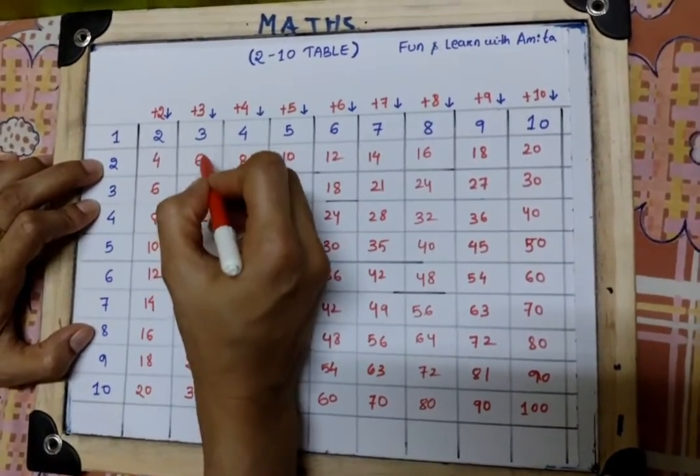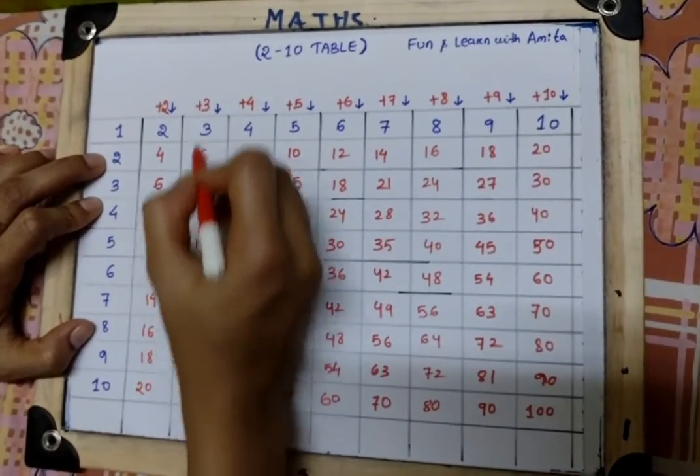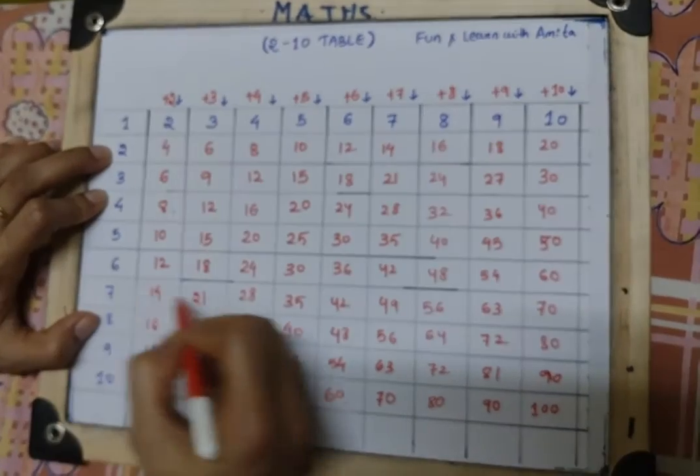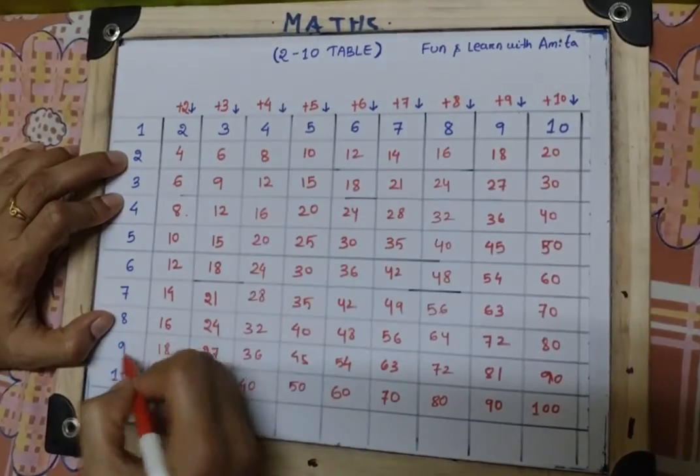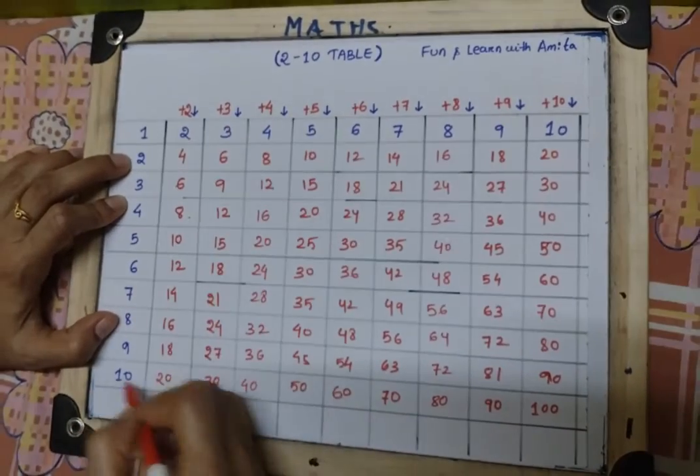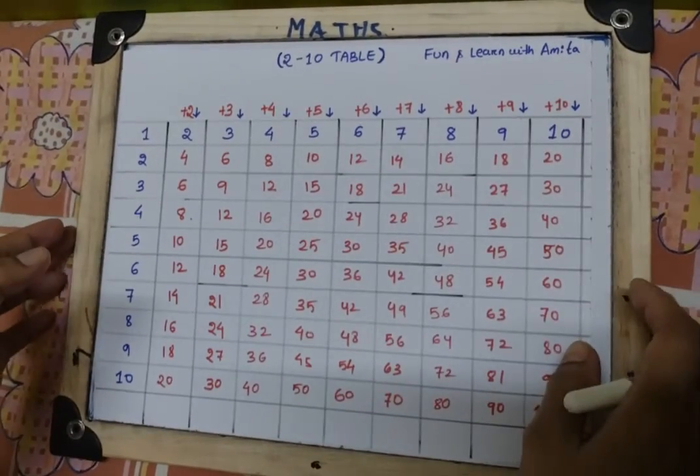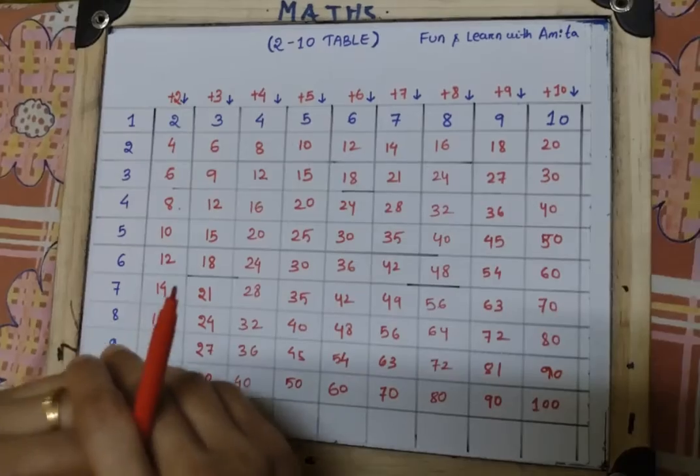So likewise, 3 ones are 3, 3 twos are 6, 3 threes are 9, 3 fours are 12, 3 fives are 15, 3 sixes are 18, 3 sevens are 21, 3 eights are 24, 3 nines are 27, 3 tens are 30.